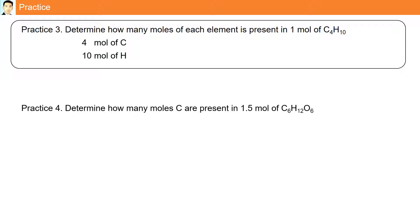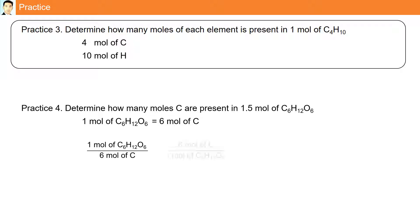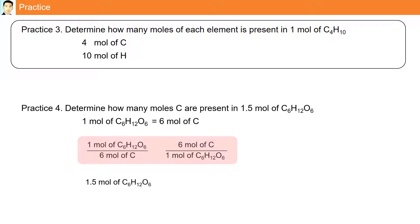Another practice. Determine how many moles of carbon are present in 1.5 moles of C6H12O6. One mole of C6H12O6 contains 6 moles of carbon atoms. So for every 1 mole there are 6 moles of carbon atoms. Therefore, for 1.5 moles, there are going to be 9 moles of carbon.